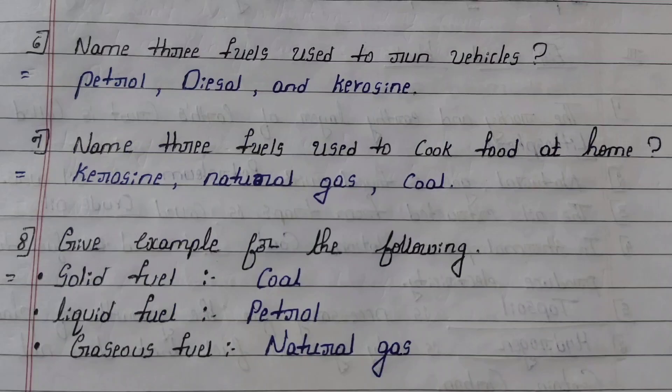Sixth question: Name three fuels used to run vehicles. Answer: Petrol, diesel, and kerosene. Seventh question: Name three fuels used to cook food at home. Answer: Kerosene, natural gas, and coal.